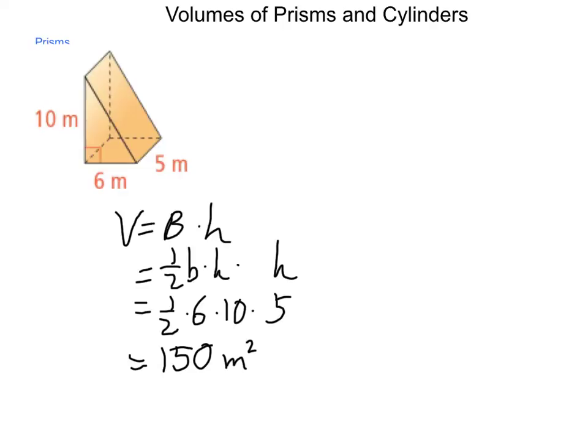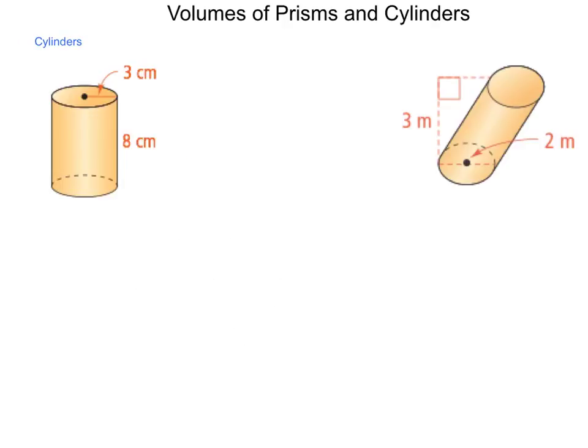If we had a different shaped base, something other than a triangle, we would simply find its area and then multiply it by the distance between those. When we get to looking at cylinders, finding the volume can be just as simple.